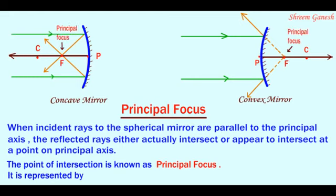It is represented by the letter F. Case 1: Concave mirror. When incident rays to the concave mirror are parallel to the principal axis, the reflected rays will actually intersect at the principal focus.